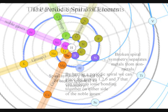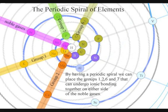Also, by having a periodic spiral, we place the groups of elements that can undergo ionic bonding together on either side of the noble gases.